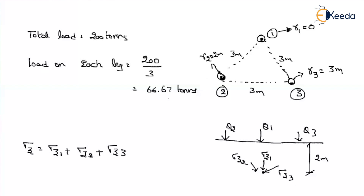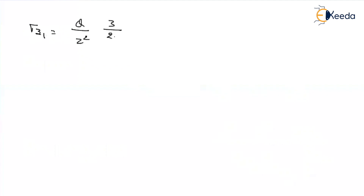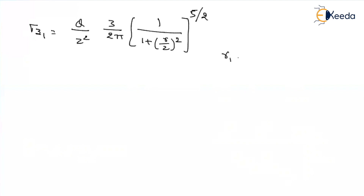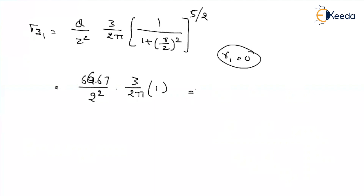Load is the same on each column — 66.67 tons — and depth is also the same. Using the Boussinesq equation: sigma Z1 equals Q divided by Z squared, into 3 divided by 2 pi, into 1 divided by (1 plus (r/z)²) to the power 5/2. For stress at leg 1 due to load at leg 1, r equals 0, so the bracketed term equals 1. With Q = 66.67 tons and z = 2 meters, sigma Z1 equals 7.98 tons per meter square.